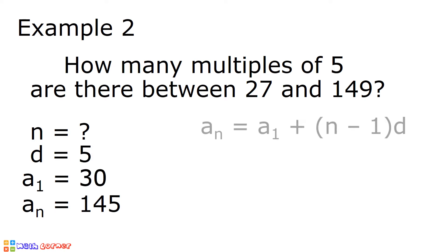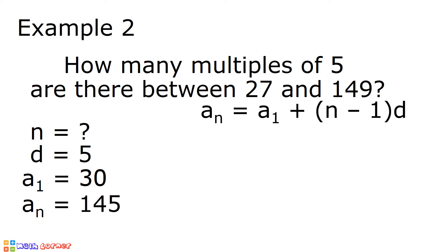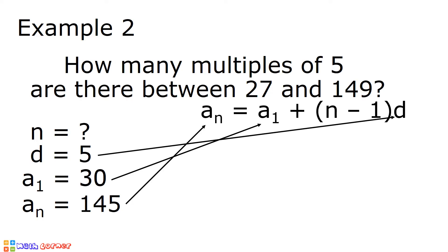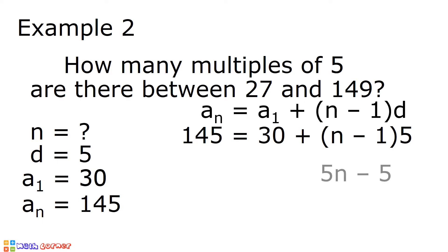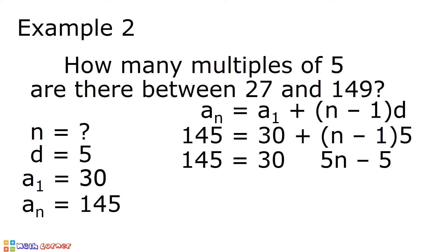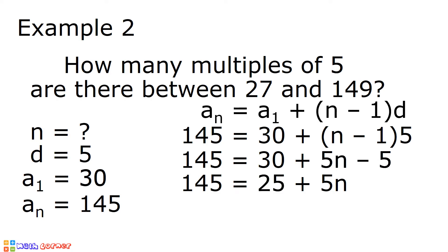To solve for n, let us substitute all the given values to our formula. 145 goes to a sub n, 30 goes to a sub 1, and 5 goes to d. After substitution, we have 145 is equal to 30 plus quantity n minus 1 times 5. We need to distribute 5 to n minus 1. 5 times n minus 1 is equal to 5n minus 5. And we have 145 is equal to 30 plus 5n minus 5. Let us combine 30 and negative 5, and we have positive 25. So 145 is equal to 25 plus 5n.